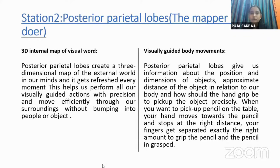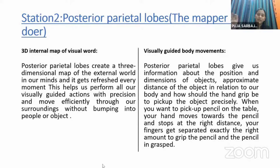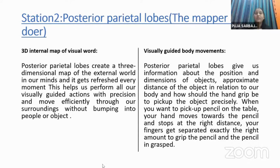Body guidance means: when multiple objects are on a table, I need to pick up a pencil from a certain distance — my right hand goes, stops there, my fingers automatically separate, and I hold the pencil. That is body guidance. 3D mapping means being able to walk straight without bumping into people or objects.